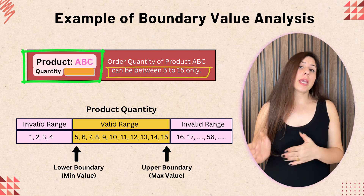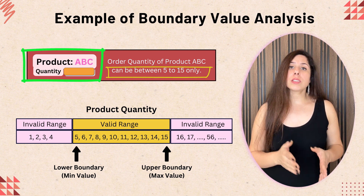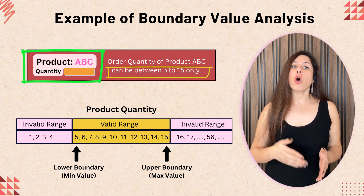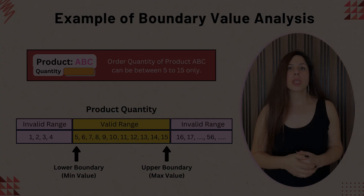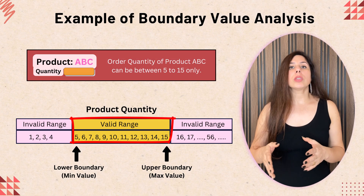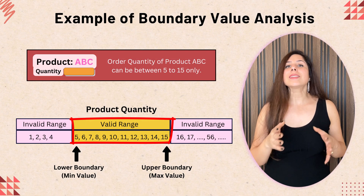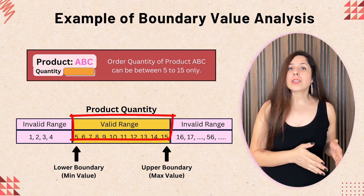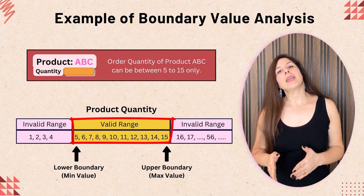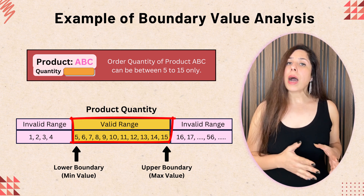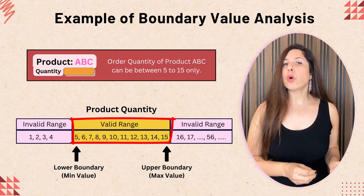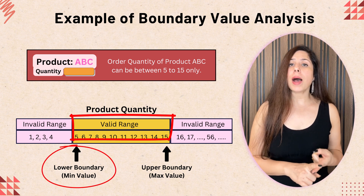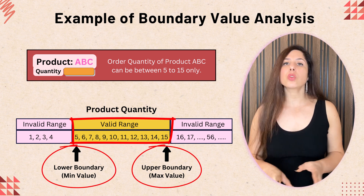So a user cannot order this product with a quantity less than 5 or more than 15. The allowed quantity for this product is strictly between 5 and 15. This range defines our boundaries. In boundary value testing, we focus on these limits — the minimum and the maximum values of the range.